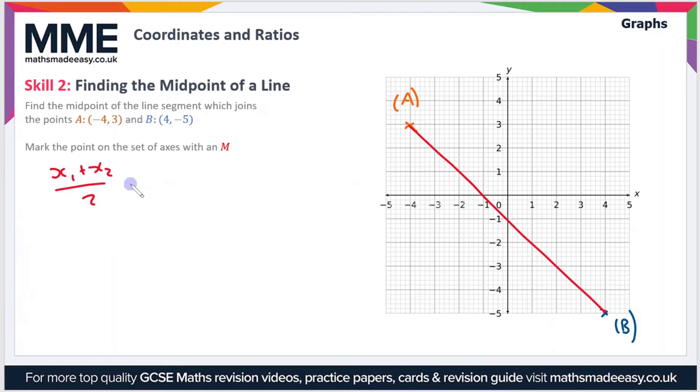If we say x1 is the x value in A, and that's -4, and then the x2 value will be the x value in B, so that's plus 4 divided by 2. So -4 plus 4 is 0, so therefore the whole expression is 0.